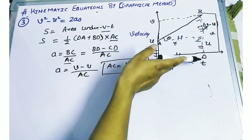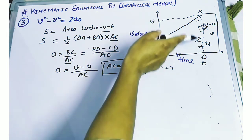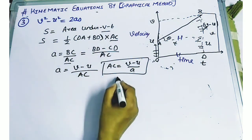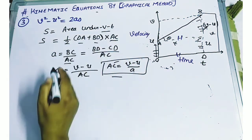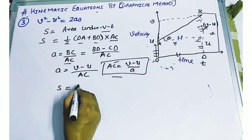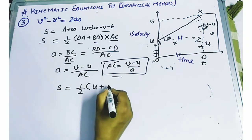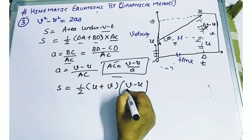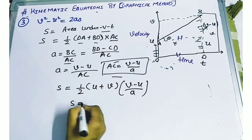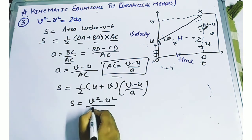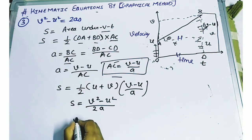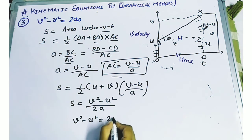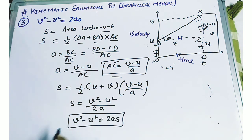We substitute OA equals u, BD equals v, and AC equals (v minus u) upon a. So S equals half of (u plus v) into (v minus u) divided by a. Therefore S equals (v squared minus u squared) upon 2a. So we can prove: v squared minus u squared equals 2aS. This is the third equation of motion. I hope the equations of motion with the graphical method are clear to you. Study everything and revise everything. Thank you.